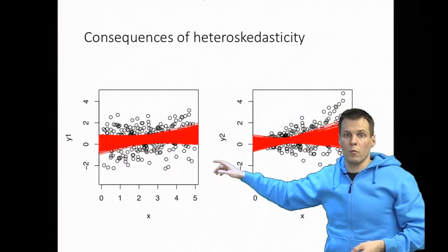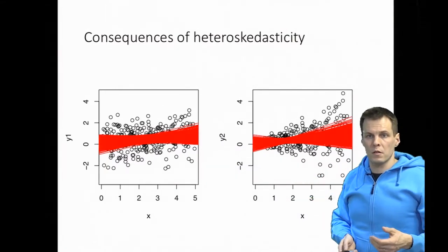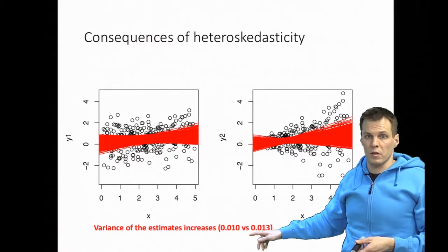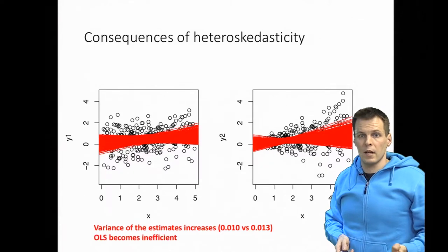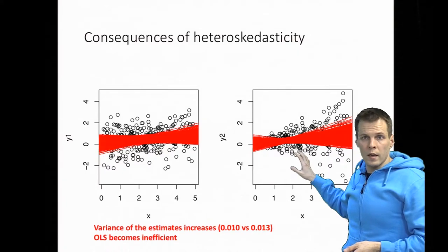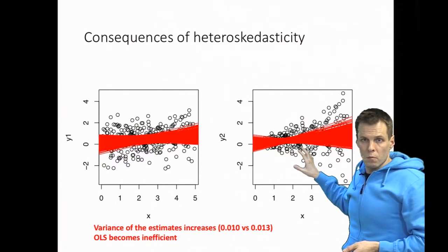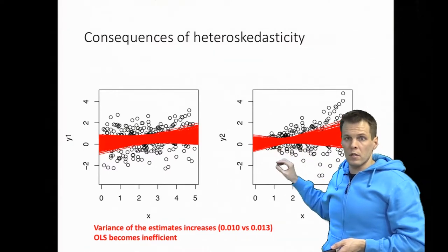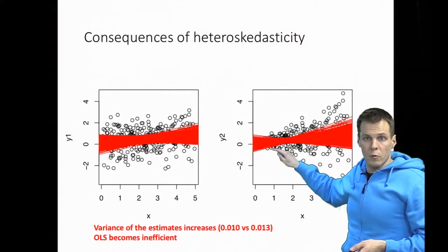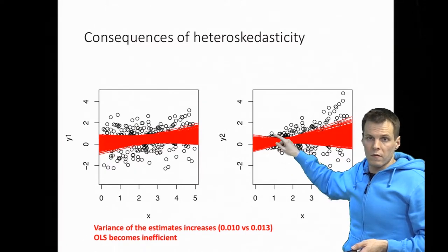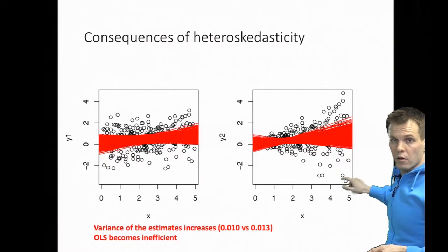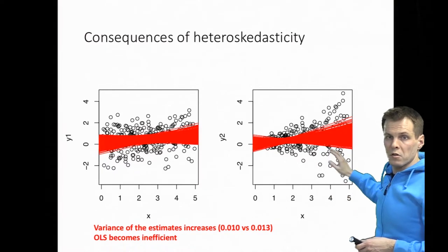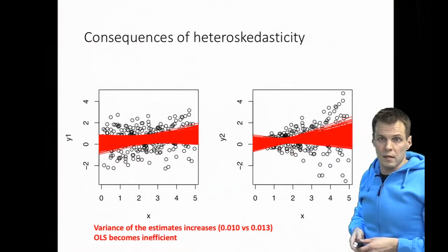There are two reasons why this is a problem. The variance of the estimates increases by about 30% going from the homoscedastic to the heteroscedastic case, meaning OLS estimates are efficient on the left but inefficient on the right. An alternative estimator called weighted least squares would be more efficient than OLS. Observations close to the regression line tell us precisely where it goes because their error term variation is small, while observations with high spread are less informative. Weighted least squares weights those less-informative observations less, producing more precise estimates.